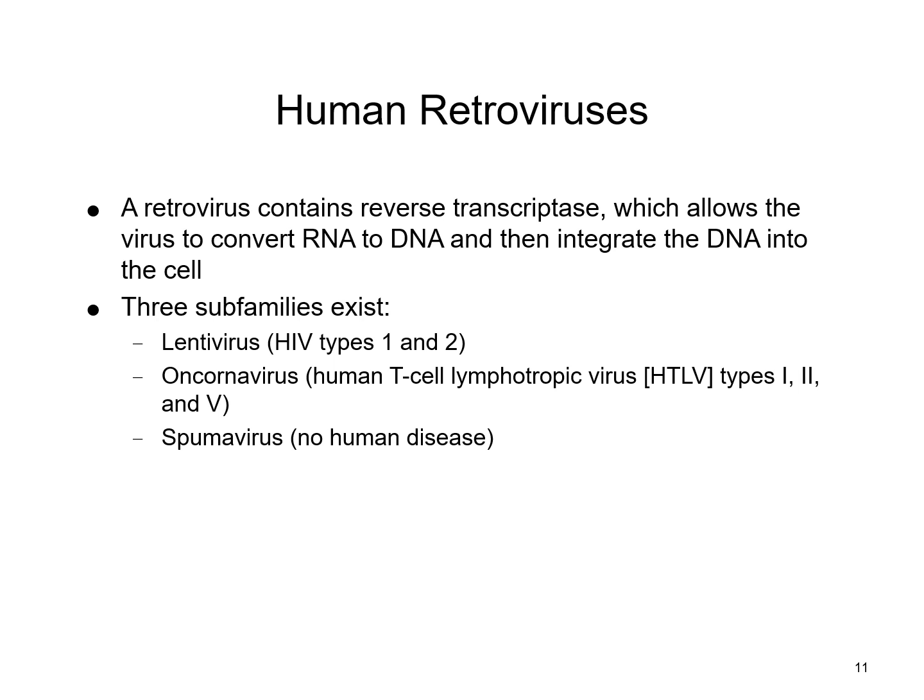Human retroviruses actually contain reverse transcriptase, which allows the virus to convert RNA to DNA and then integrate that DNA into the cell. There are three subfamilies, and more specifically we're looking for HIV types 1 and 2, as well as the human T cell lymphotropic virus, HTLV types 1, 2, and 5.